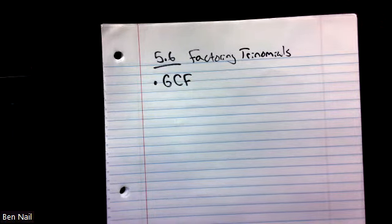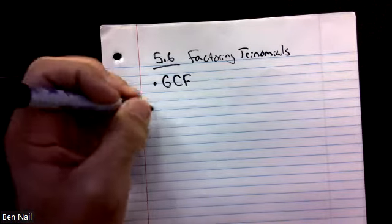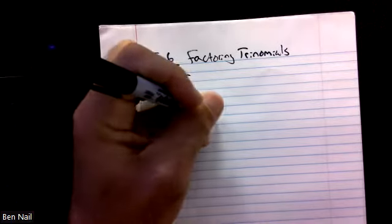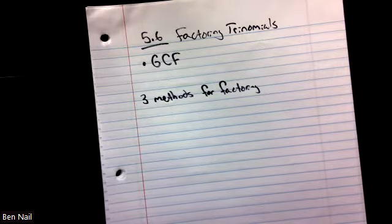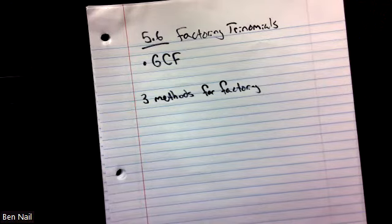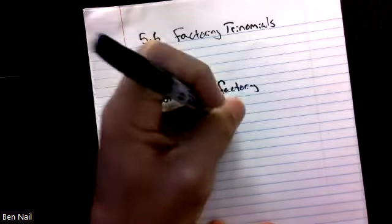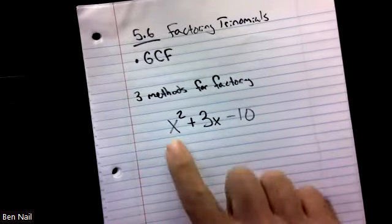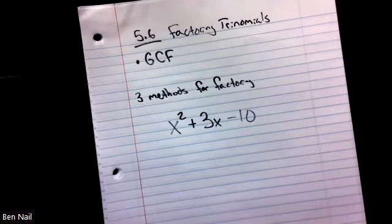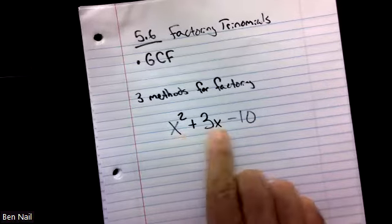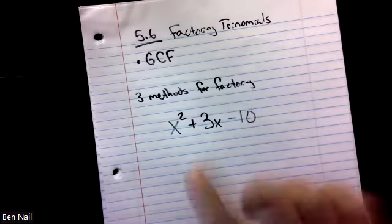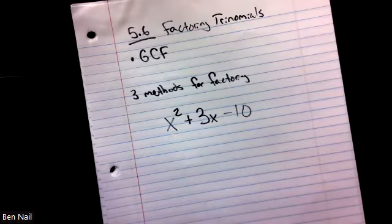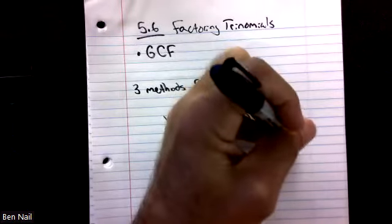I'll do some examples where we get to do that. But trinomials are going to be three-term problems, and we're going to talk about three methods for factoring trinomials, depending on what the problem looks like. The easiest ones are if there is no number in front of the x squared. They can change the letters — I primarily use x's just because it's easier. My Math Lab loves to use R's and S's and P's and Q's. The letter doesn't necessarily matter; just use whatever letter they use.